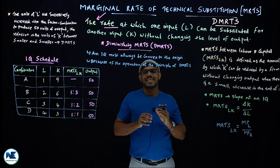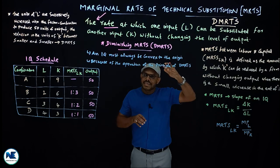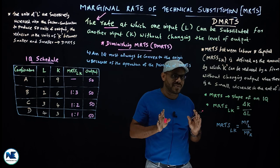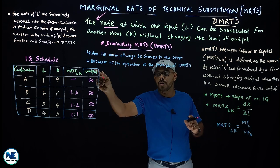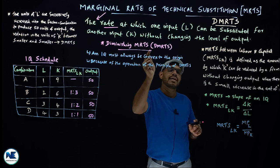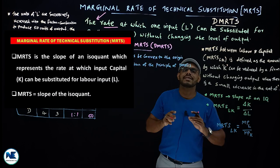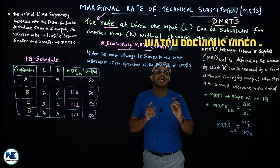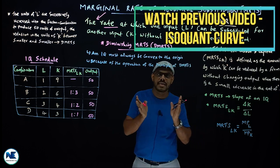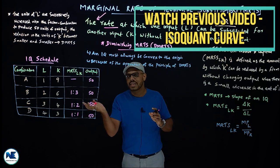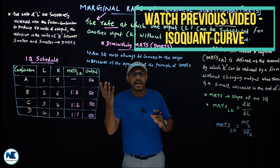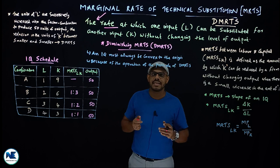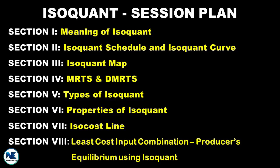The MRTS is diminishing. We'll discuss the schedule which shows that marginal rate of technical substitution is diminishing. We'll convert the isoquant schedule to an isoquant map. I've discussed the isoquant curve in previous videos - check the description box for the link.